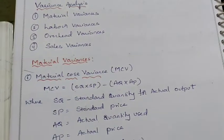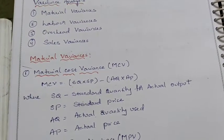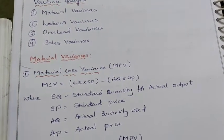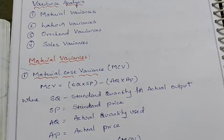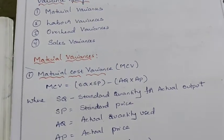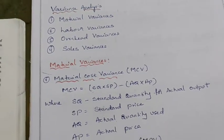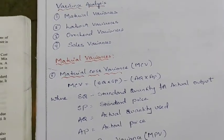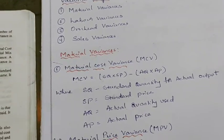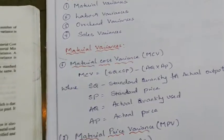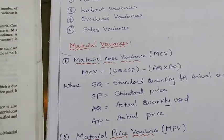Today I am going to discuss material variances and their formulas. Under material variances, we have: material cost variance, material price variance, material usage or quantity variance, material mix variance, and material yield variance.